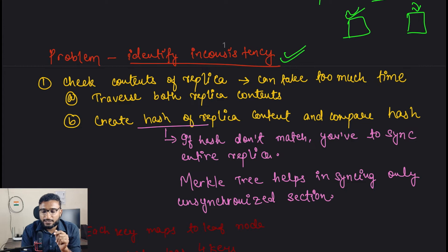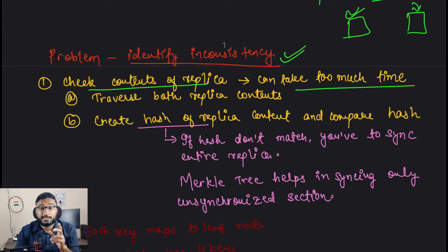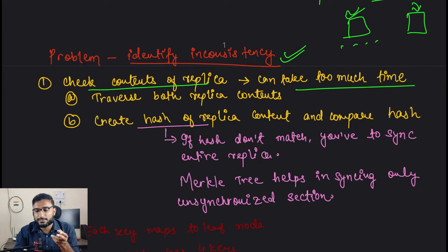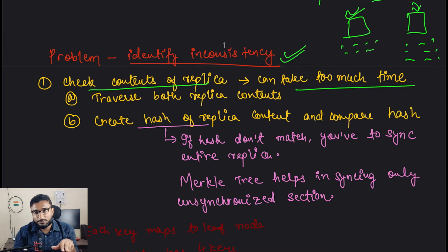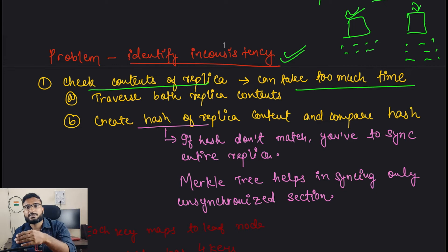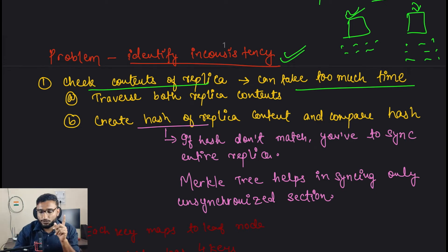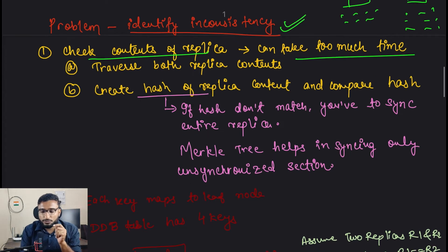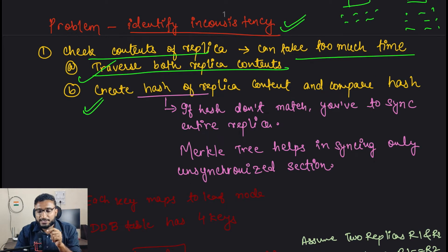One way is to check the contents of the replica, but this can take too much time - you'd have to check character by character, even for a 2GB file. We shouldn't do that. Another approach is to create a hash of the replica content and then compare hashes. You create hash H1 for replica R1 and hash H2 for replica R2, then directly compare H1 and H2.